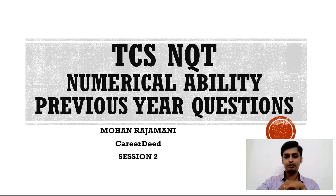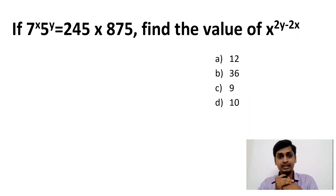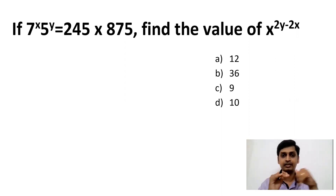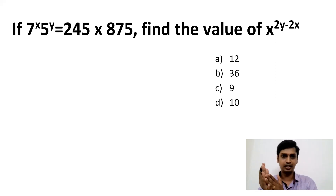Question number one: if 7^x × 5^y = 245 × 875, find the value of x^(2y) − 2x. The answer purely lies in factoring the numbers. Since it is 245 × 875, it is definitely made of 7s and 5s only, so we need to factor these numbers.